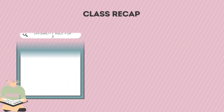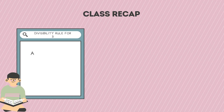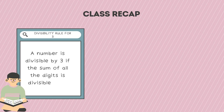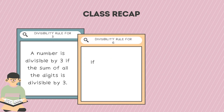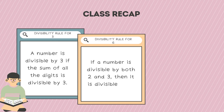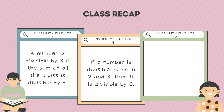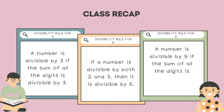It is very easy to know if a number is divisible by 3, 6, and 9, right? So let's have a recap. Divisibility rule for 3: a number is divisible by 3 if the sum of all the digits is divisible by 3. Divisibility rule for 6: if a number is divisible by both 2 and 3, then it is divisible by 6. Lastly, divisibility rule for 9: a number is divisible by 9 if the sum of all the digits is divisible by, or a multiple of, 9.